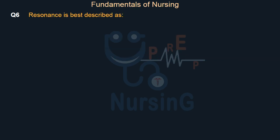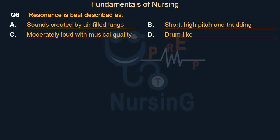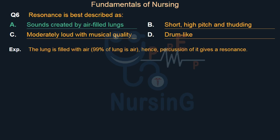Resonance is best described as: Option A — Sounds created by air-filled lungs. Option B — Short, high-pitch and thudding. Option C — Moderately loud with musical quality. Option D — Drum-like. Right answer is Option A: Sounds created by air-filled lungs. The lung is filled with air — 99% of the lung is air — hence, percussion of it gives a resonance.